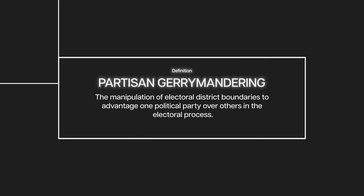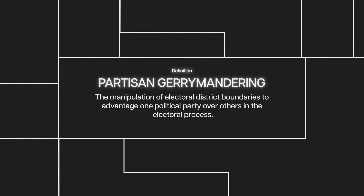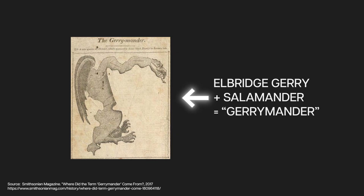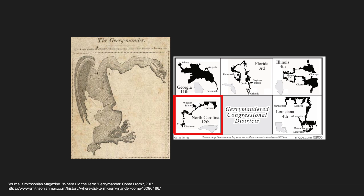Partisan gerrymanders used to be conspicuous. We're probably most familiar with gerrymandering through these oddly shaped districts that look like a salamander — that's where gerrymandering actually got its name in the 1800s — or my personal favorite, the I-85 district in North Carolina. We can pick them out more or less visually with our bare eyes and see some things just a little bit off.